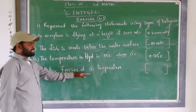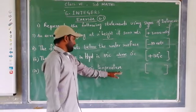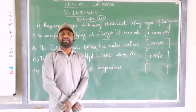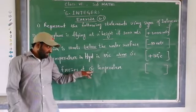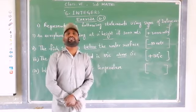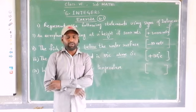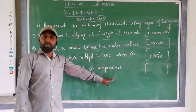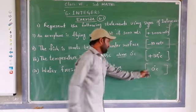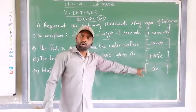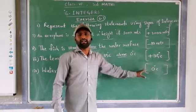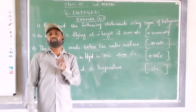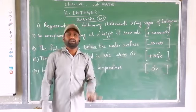Fourth: water freezes at 0 degrees Celsius temperature. Here we are given only 0 degrees Celsius. 0 does not have any sign — it is neither positive nor negative. So you need not give any sign to this. No positive sign, no negative sign. 0 is 0. Above means positive, below means negative — that is the very important thing to remember.